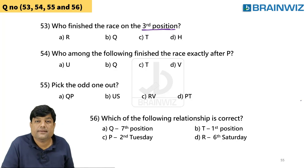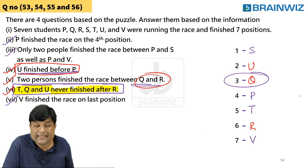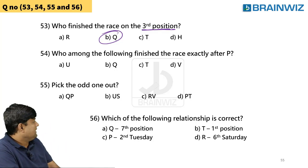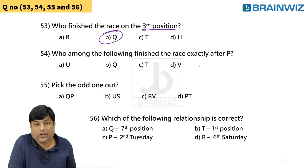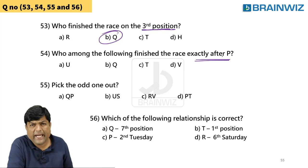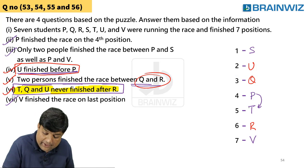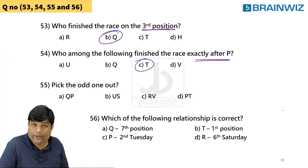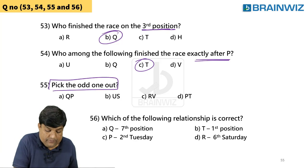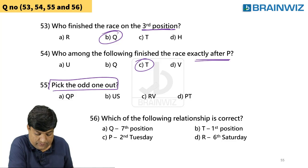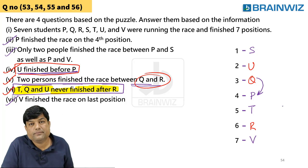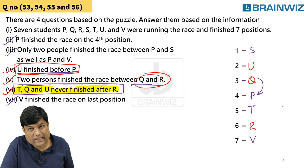Let's cross-check the answers. Who finished the race on the third position? That is Q — Q finishes the race on the third position. Now the second question: who among the following finished the race exactly after P? Exactly after P — not before P, but after P. The answer is R.